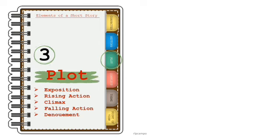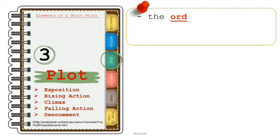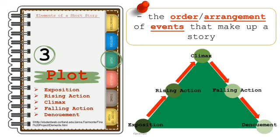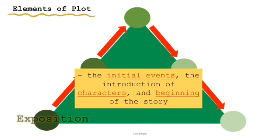The third element is plot. It is the order or arrangement of events that make up a story. It has five elements: exposition, rising action, climax, falling action, and denouement. Exposition is the initial events, the introduction of characters, and the beginning of the story.